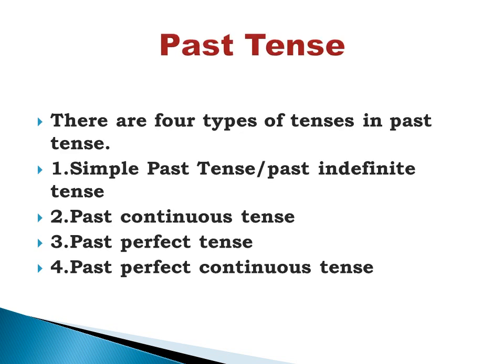Past tense. There are four types of tenses in past tense: simple past tense, also known as past indefinite tense; past continuous tense; past perfect tense; and past perfect continuous tense.